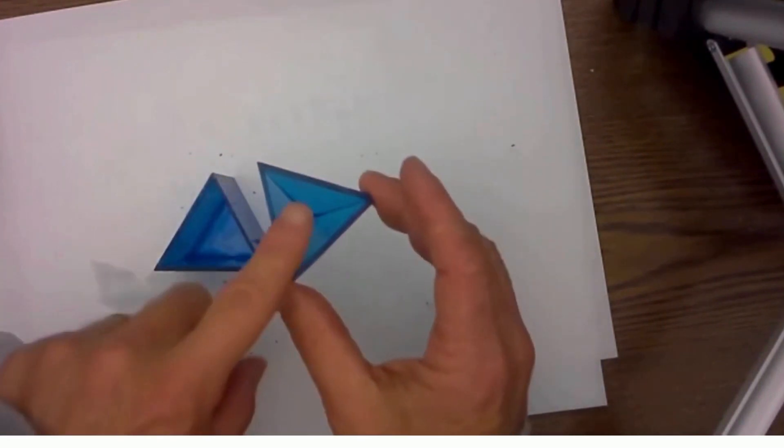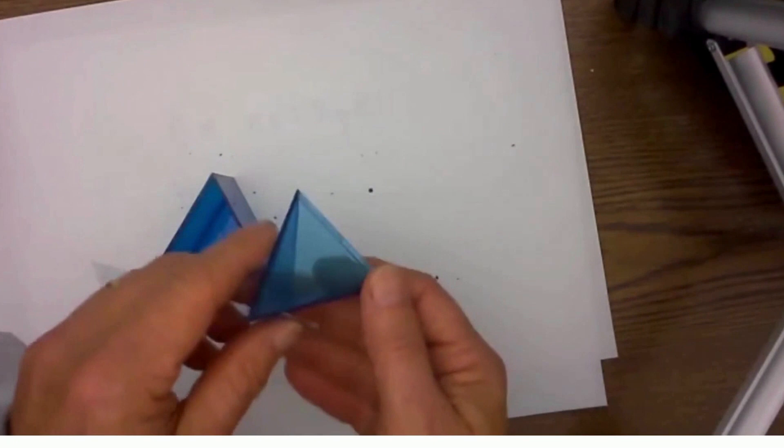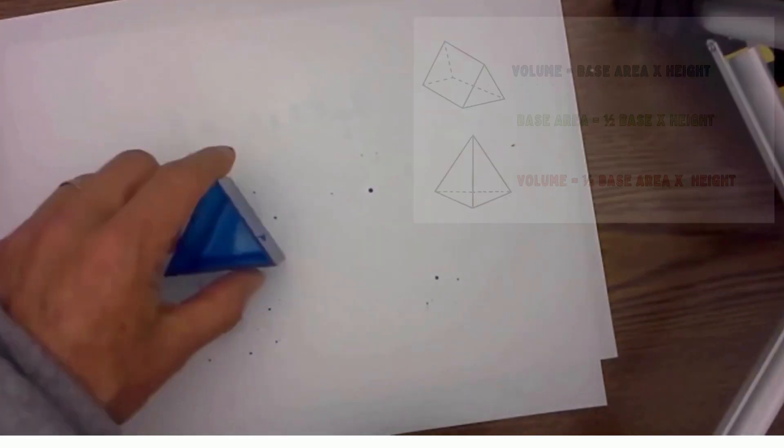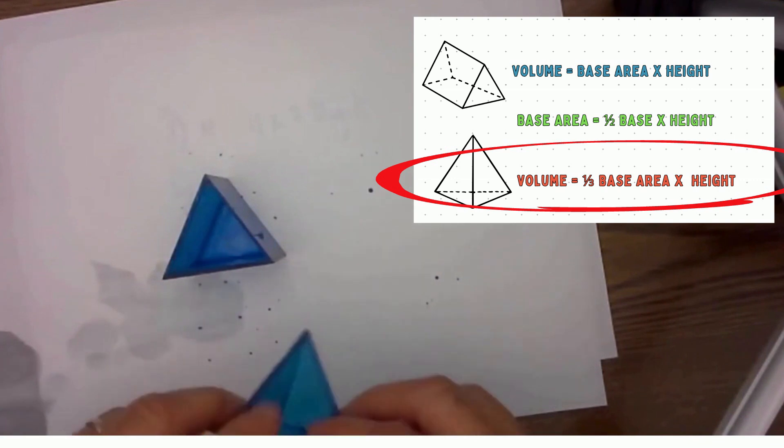In theory, the volume of this triangular pyramid should be exactly one third the volume of this prism.